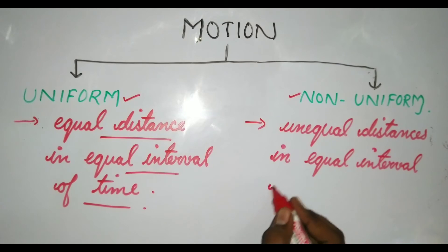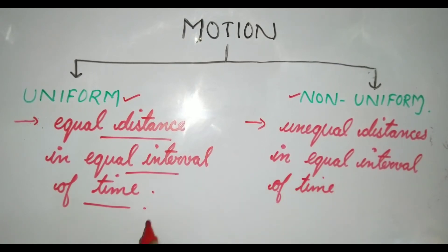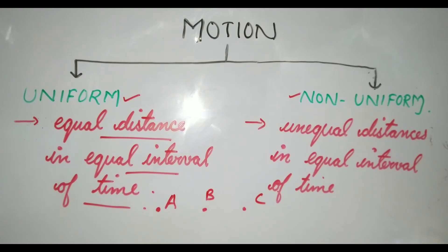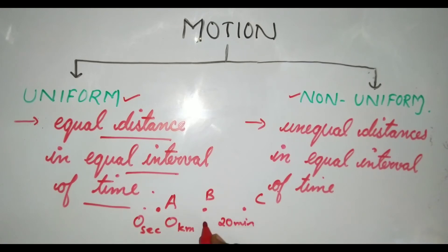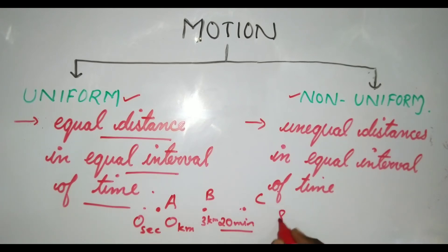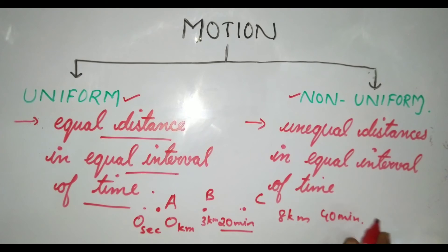Let's take an example. At position A, time is zero and distance is zero. He reaches position B — time taken is 20 minutes and distance covered is three kilometers. Then from B to C, he has covered around eight kilometers and the time taken is 40 minutes.